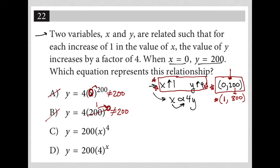For choice C, if x were 0, 0 to the 4th power is actually just 0. So 200 times 0 is 0. That's also not equal to 200. So C is gone, which means D has to be the right answer, but let's check it out.